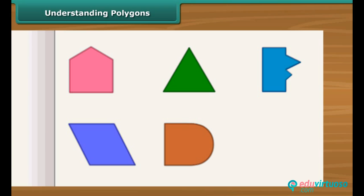Each of these curves have different shapes. First four curves are made up of straight lines and are called polygons. A figure is a polygon if it is a simple closed figure made up of line segments.